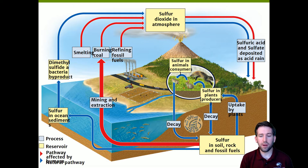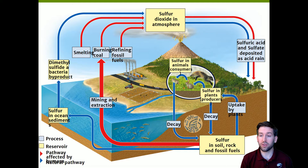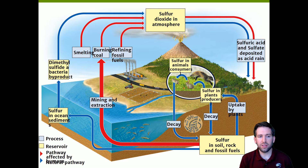The last cycle is the sulfur cycle. Naturally, sulfur in rock and soil is taken up by plants, moves through the food chain, and when organisms die and decay, returns to the soil. Volcanoes also throw sulfur dioxide into the atmosphere — a totally natural process — which eventually falls back as sulfuric acid, a form of acid rain. In the ocean, bacteria in sediment produce dimethyl sulfide gas, which enters the atmosphere.